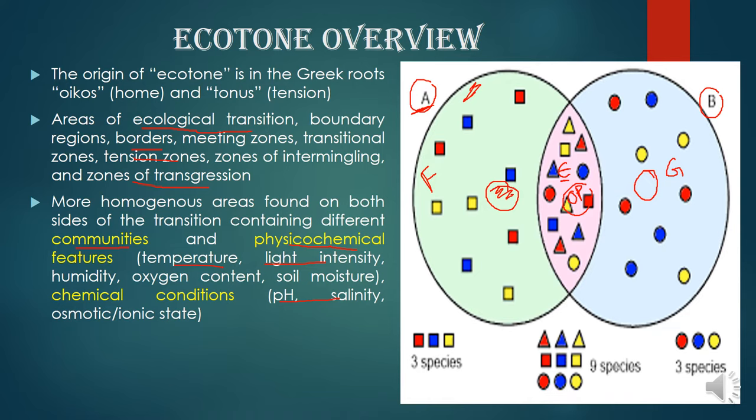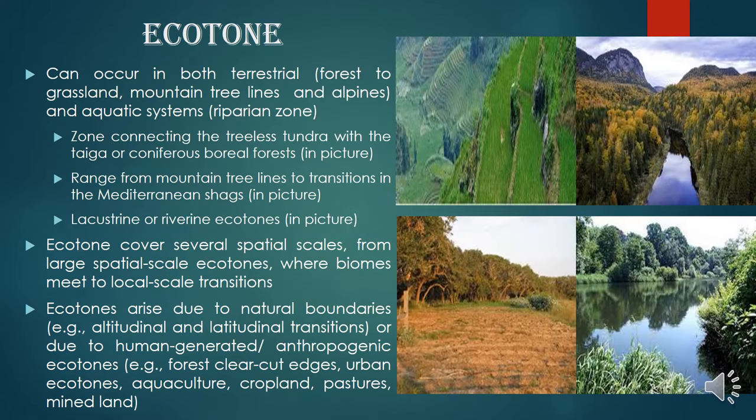This intermediate characteristic can manifest as biodiversity. Let's see what the different types of ecotones are.